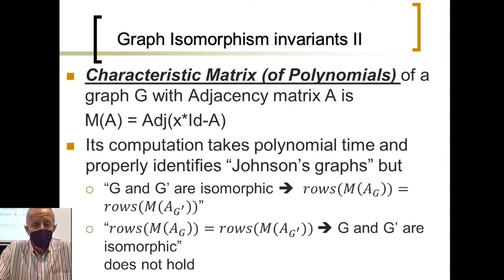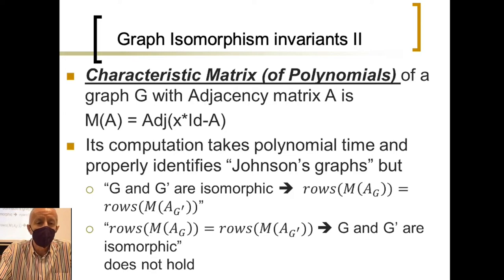We have been working over a sort of characteristic matrix of polynomials, which instead of having this polynomial characteristic, we are working over the matrix form of the adjacent of all the elements, from the determinant. And, we have proved that each computation takes polynomial time and properly identifies some quite hard graphs to be identified regarding this isomorphic issue as Johnson graphs.